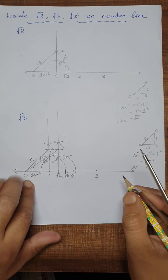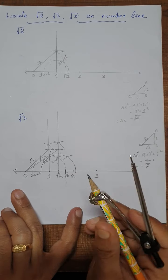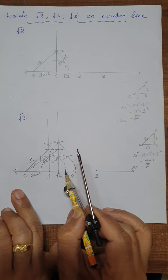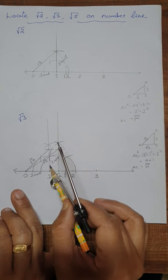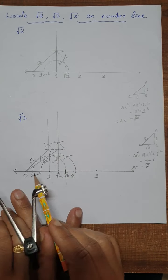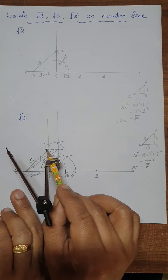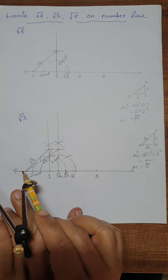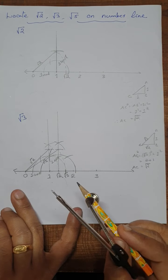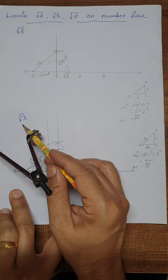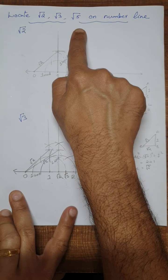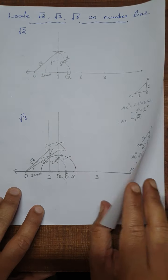So to locate root 3 on the number line, first we locate root 2, then we locate root 3. The heights of the triangles should both be one unit. In the first triangle, base is one unit and height one unit; in the second triangle, base is root 2 units and height one unit. This is the location of root 3 on the number line. Now we are going to learn how to locate root 5 on the number line.